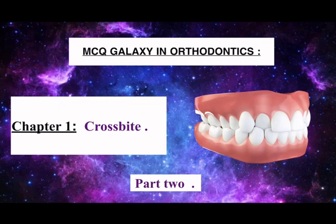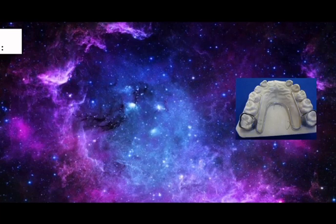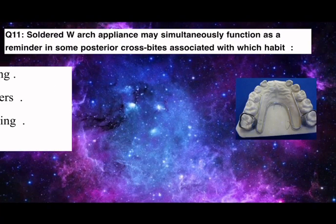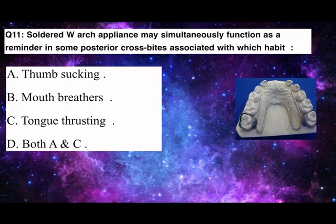MCQ Galaxy in Orthodontics, Chapter 1: Crossbite, Part 2. Q11. Soldered W-arch appliance may simultaneously function as a reminder in some posterior crossbites associated with which habit? A. Thumb-sucking. B. Mouth-breathers. C. Tongue-thrusting. D. Both A and C.